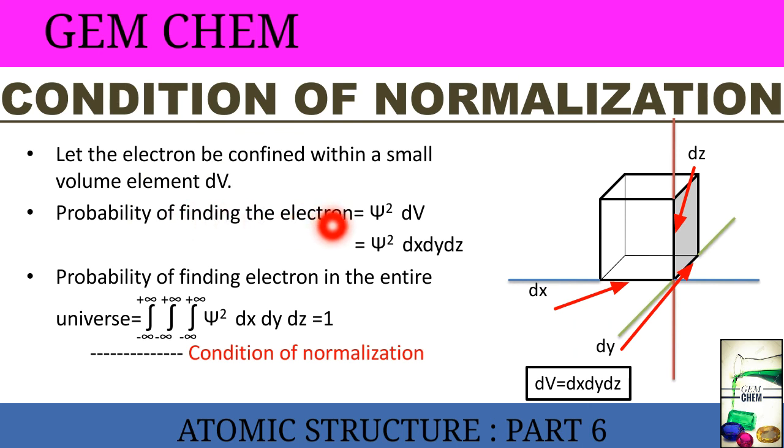So the probability of finding the electron: we have already seen Ψ². And in which volume element? That is dV. So we have taken it as Ψ² dV. And dV is given by dx × dy × dz. So we have just substituted the value in this equation and obtained this one.